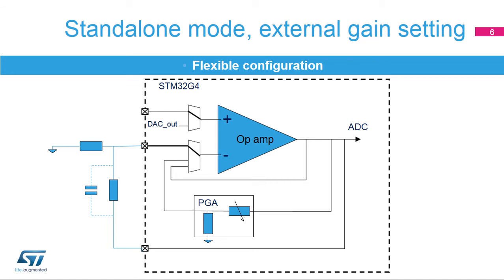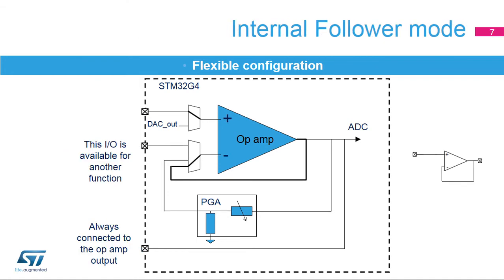The operational amplifiers support a default configuration using the factory trimming values and operate in normal mode. They can also be configured as an internal voltage follower, where the internal switch connects the output to the inverting input. In internal voltage follower mode, the GPIO pad assigned to the op-amp's inverting input can be freed for use with a different function.